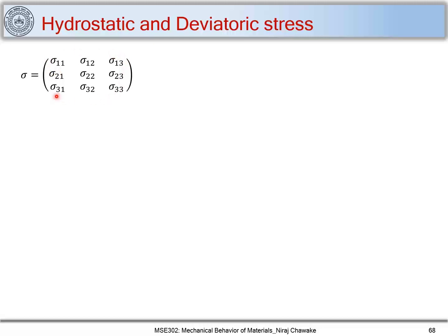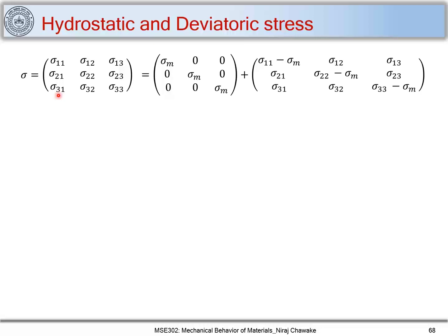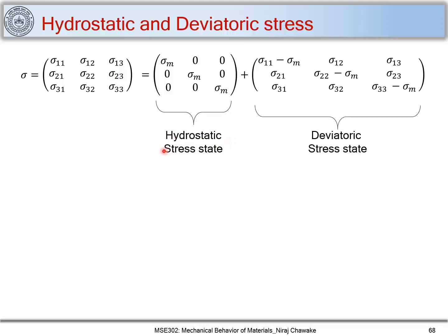We can write this stress state in another way. I can write this stress state with just diagonal elements where shear components are zero and the diagonal components are equal — plus another stress tensor where the shear components remain the same but the diagonal elements are subtracted by a term sigma m. So this stress tensor is divided into two parts: the first part is called the hydrostatic stress state and the second part is called the deviatoric stress state.